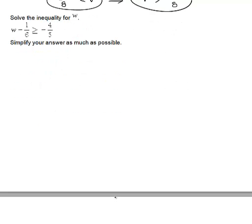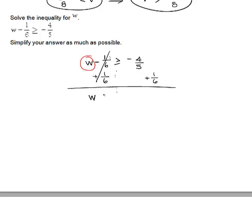Here we're solving for w. Our inequality is w minus 1 sixth is greater than or equal to negative 4 fifths. Again, my goal is to get w by itself, so I need to add 1 sixth to both sides. These go away, and I simply have w is greater than or equal to negative 4 fifths plus 1 sixth.